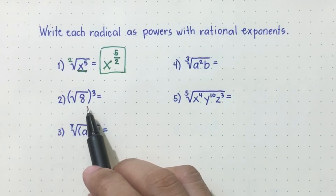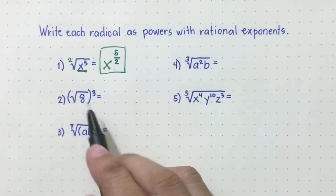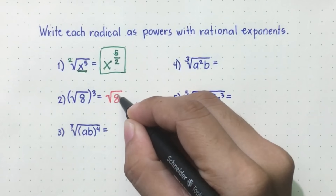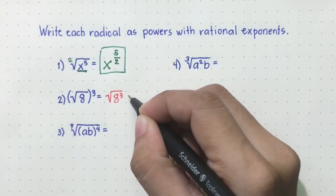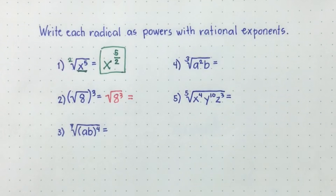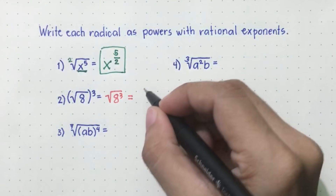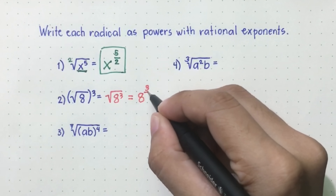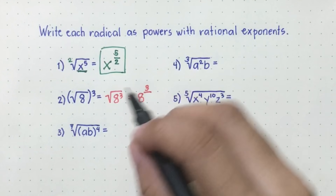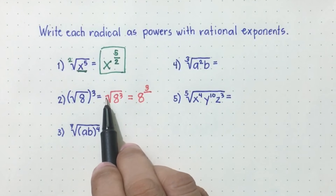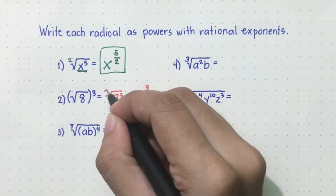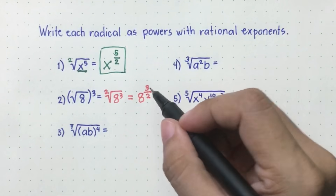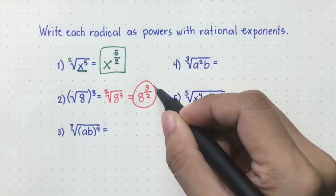How about this one? Square root of eight raised to three. This is just the same as the square root of eight cubed. So when you write this as a power with rational exponent, eight will be the base, three will be the numerator, and the denominator is the index. Again, we cannot see the index, therefore automatically that is two. So the denominator will be equal to two, and we get eight raised to three-halves.